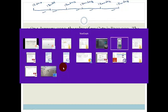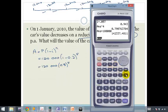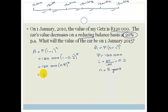So we get out our calculator, and we clear it. We've got 0.8 to the power of 5, which is equal to that, and then we times it by 120,000, and we get R39,321.60.